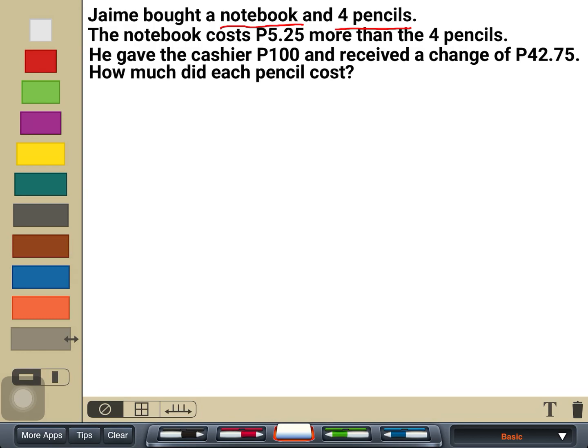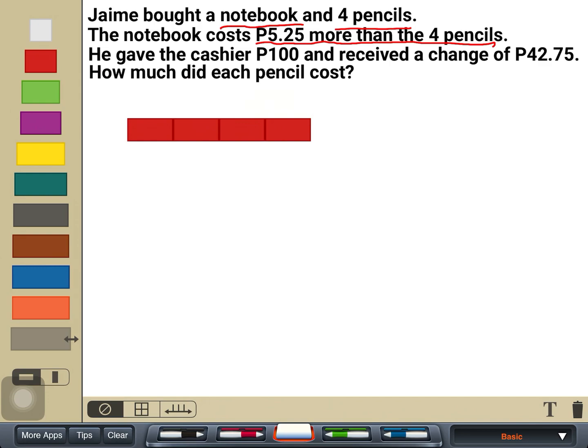Aside from that, we also know that the notebook is 5.25 more than the four pencils. So let us try to visualize that first in a model. We know that there were four pencils. I will be writing P here for pencils. And then, the notebook.